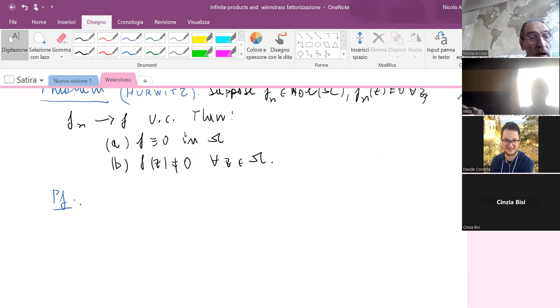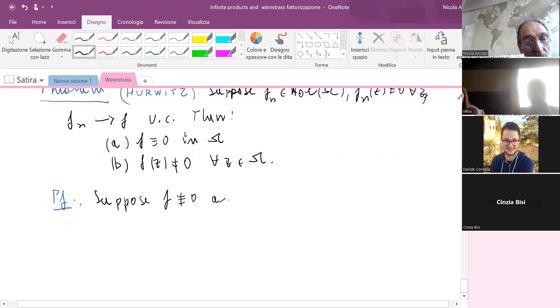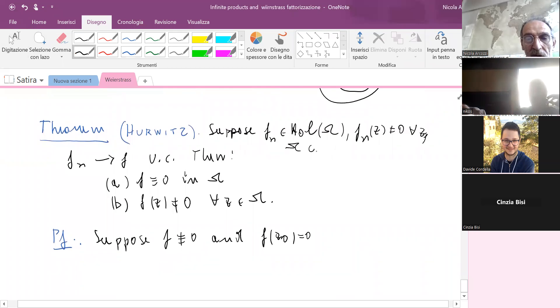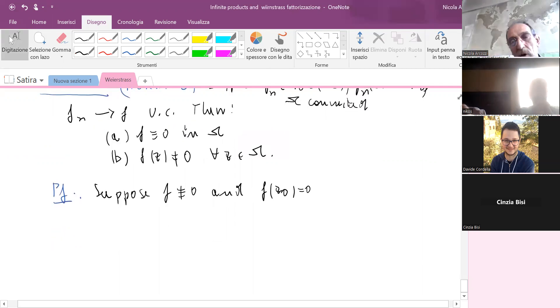Suppose by contradiction the limit function is not identically zero and it is zero at some point. Here omega is connected, open connected. If it's not connected, I can make zero one connected component and different than zero some other one.